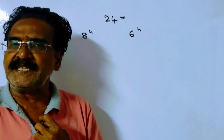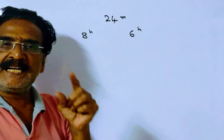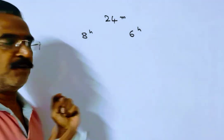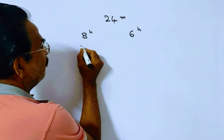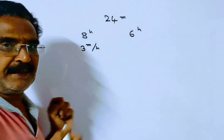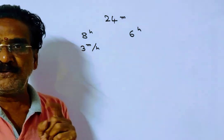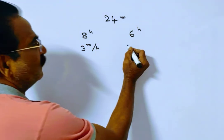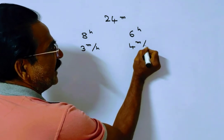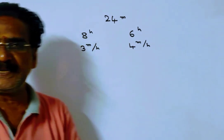The first candle is consumed in 8 hours, meaning the first candle is consumed at the rate of 3 meters per hour — 8 times 3 is 24. The second candle is consumed at the rate of 4 meters per hour — 6 times 4 is 24.